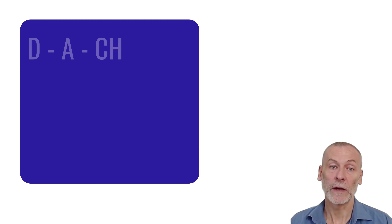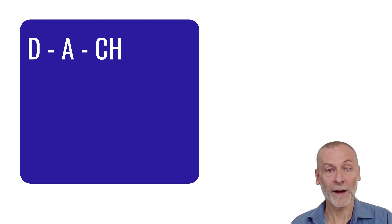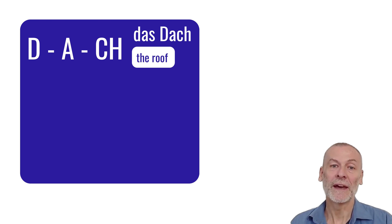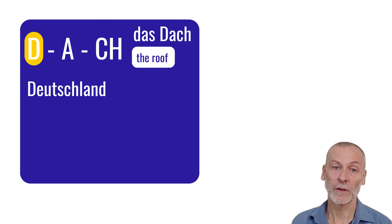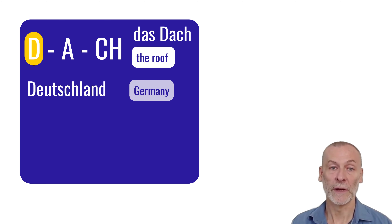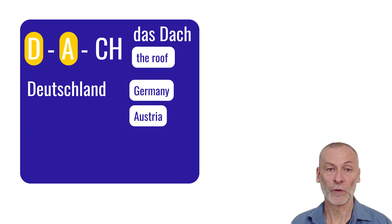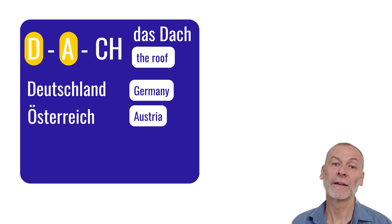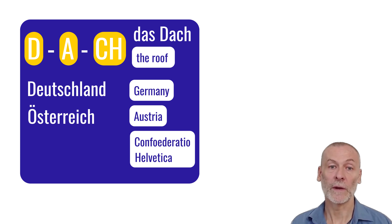Whenever you hear people talk about the DACH region, it's not about the German word for roof — Dach — but it's about DACH: the international signs for D, Deutschland, Germany; A, Austria, Österreich; and CH, Confoederatio Helvetica, the Latin name for Switzerland.